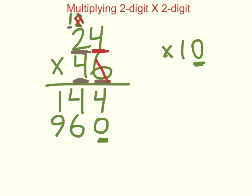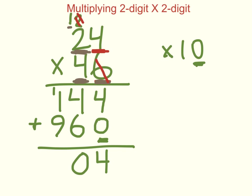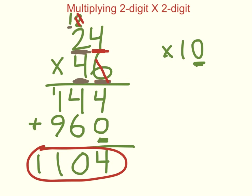The last step will be to add this together. Four plus zero is four. Four plus six is ten — carry my one. One plus one plus nine is eleven. And there you have the answer: 24 times 46 is 1,104.